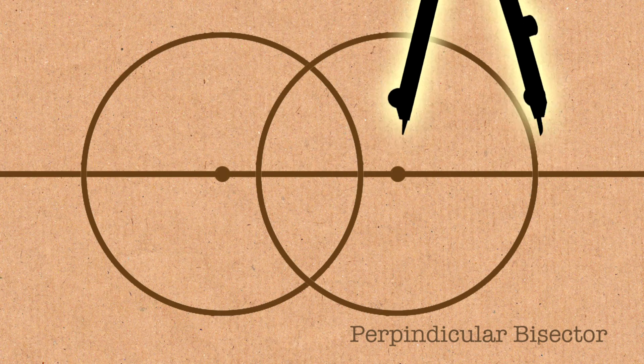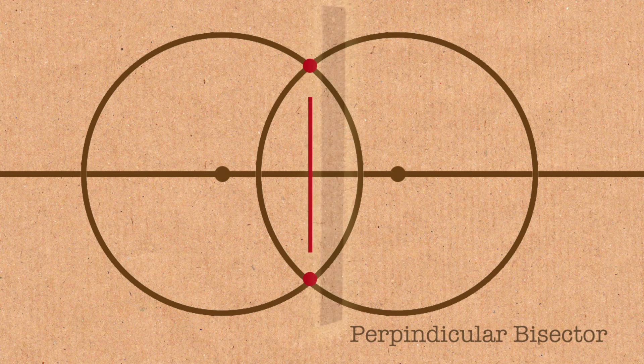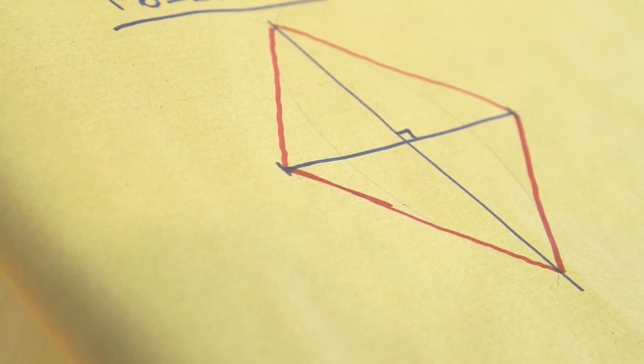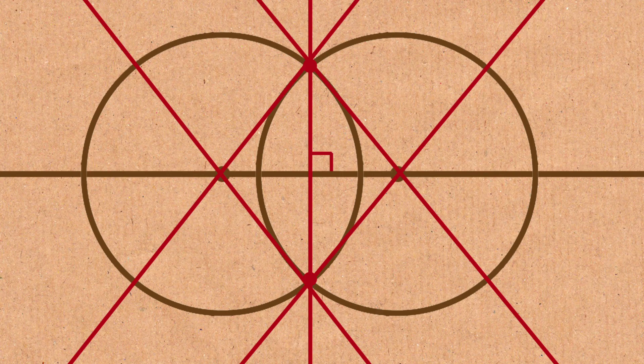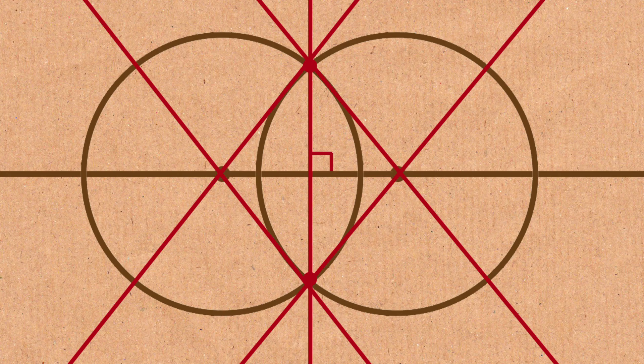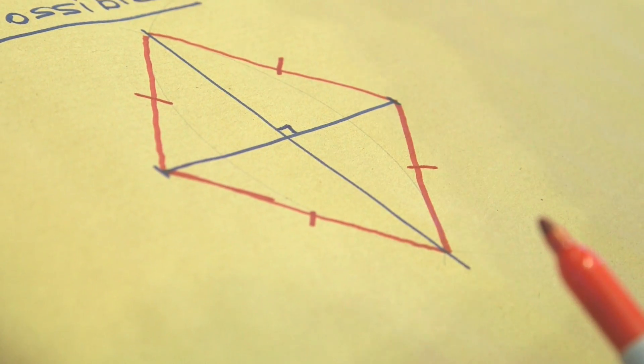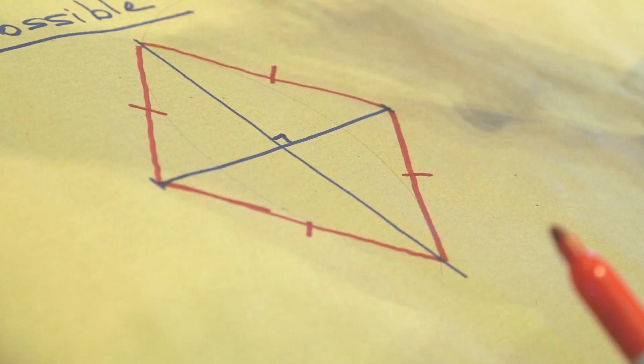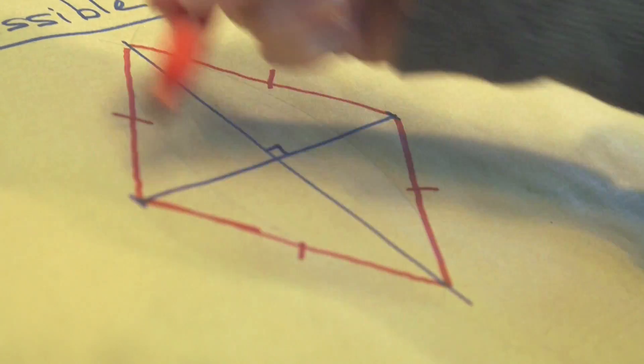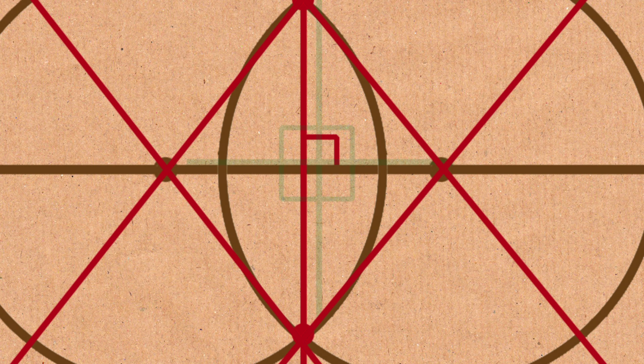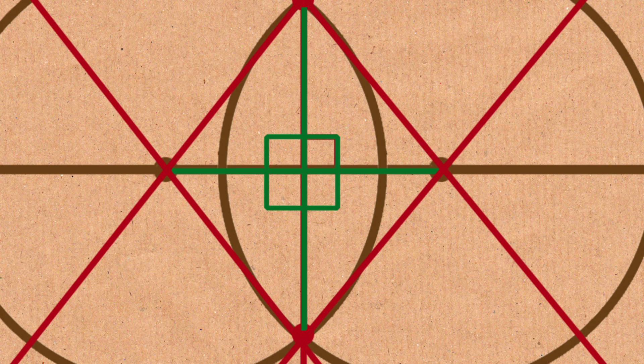So why is that? I won't show you all the proofs but I will show you this one. If you connect all of these points, well, all of these red lines are the radius of the circle and those are all the same. They are all the same length because I kept the compass the same width the whole time. So this shape is what's called a rhombus. One of the properties of the rhombus is that the two diagonals are perpendicular to each other and cut each other in half.